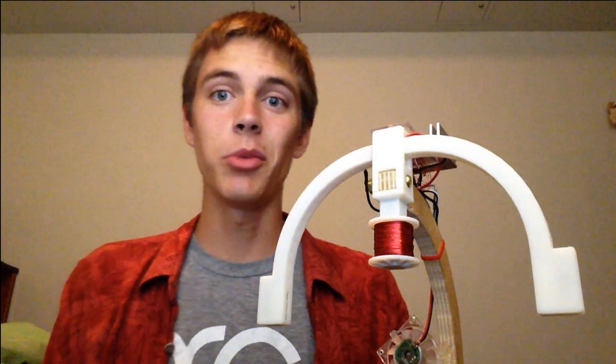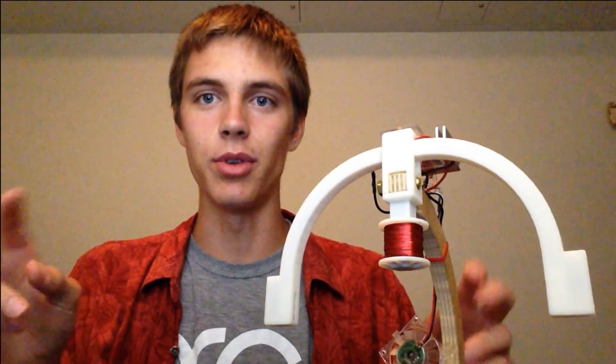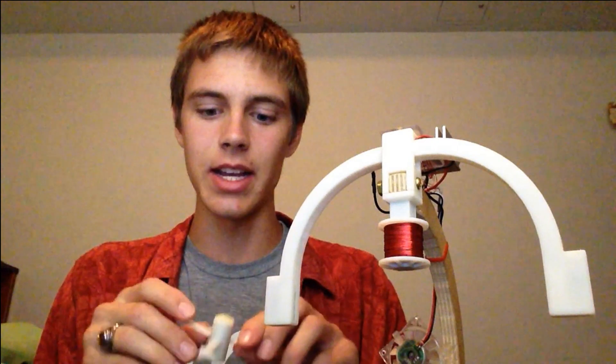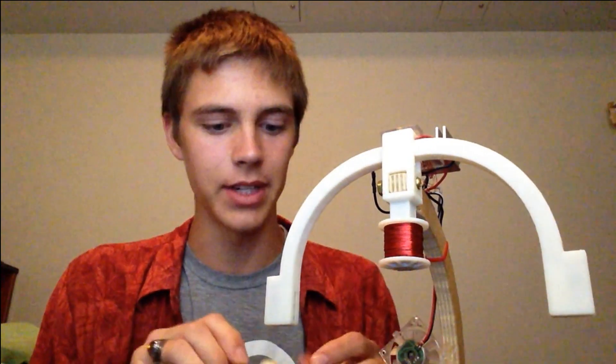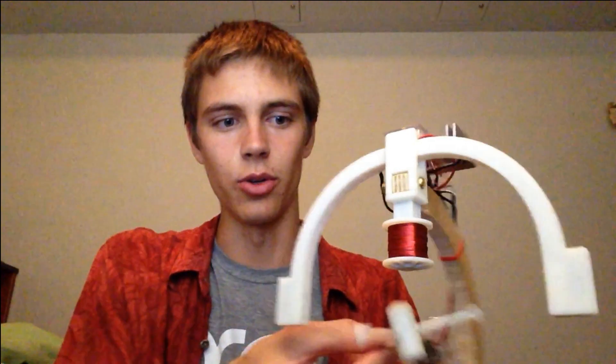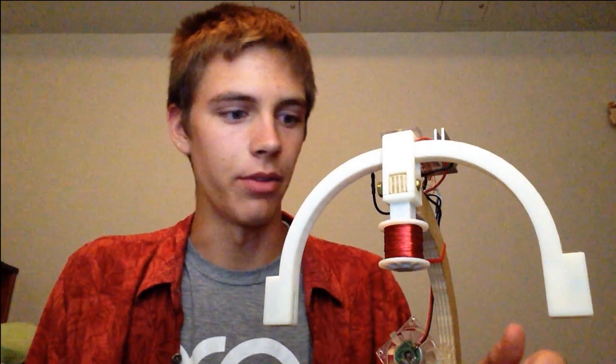So the problem with making a computer do this for us is that we need to give the computer eyes so that it can actually see how far away the thing we're levitating is from the thing that is doing the levitating. So it needs to know whether this is too low or this is too high and subsequently turn on and off the magnet.